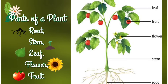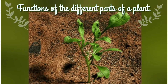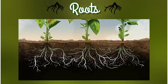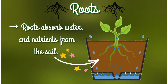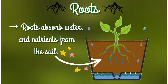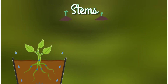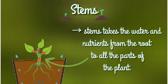Each part of the plant has a special job to do. The roots are underground parts of the plant which absorb water and nutrients from the soil. The stem then transports this water and nutrients to all the other parts of the plant.